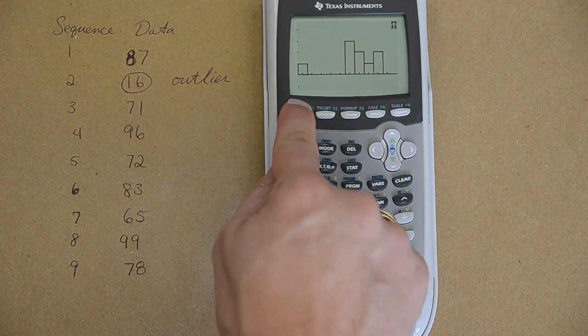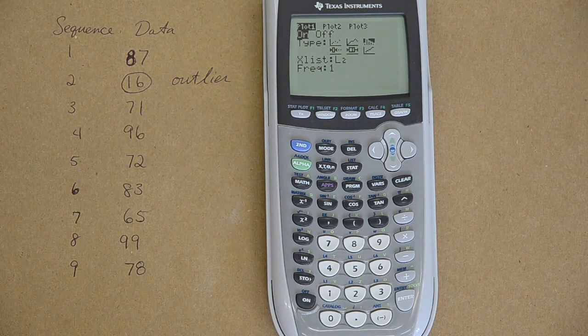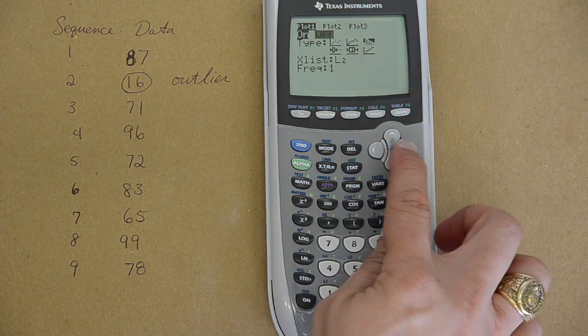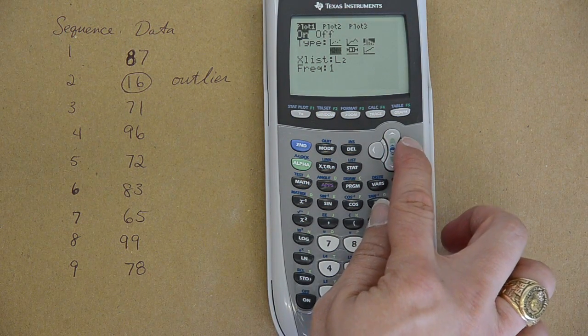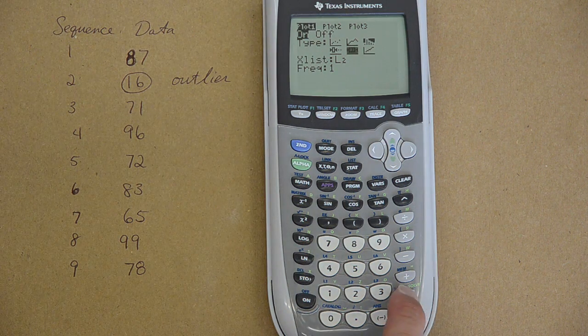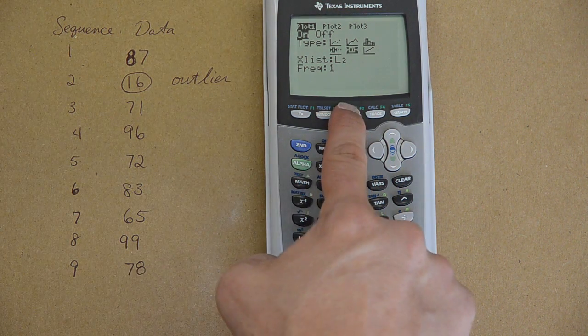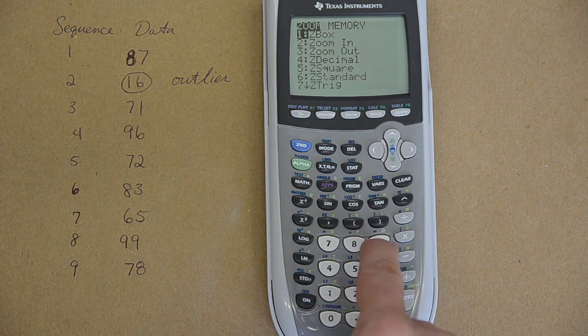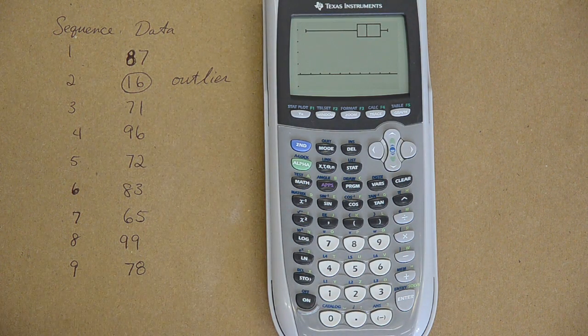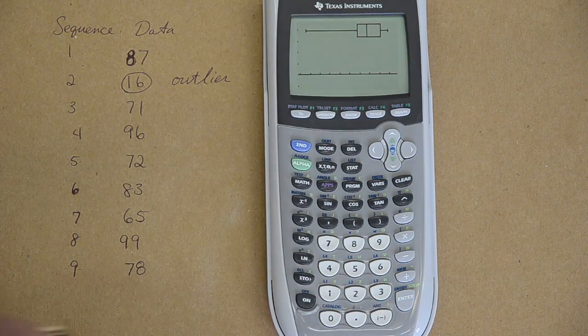Let's make a box plot. Go back to second stat plot and hit one. We are going to make a modified box plot and a regular box plot. A regular box plot is, let's see what it looks like, enter on the second icon of the third row. Hit zoom 9 every time you want to make a new stat plot.